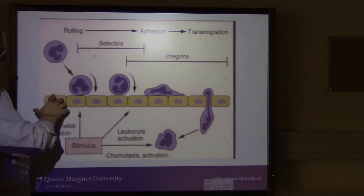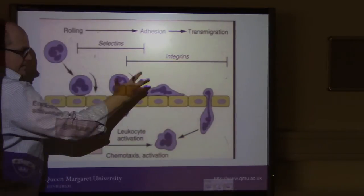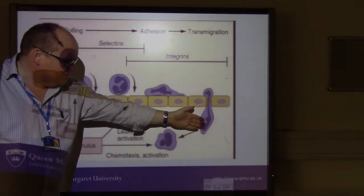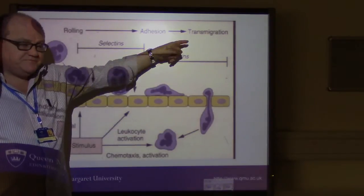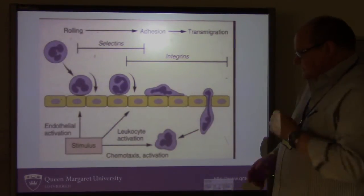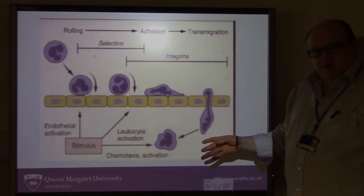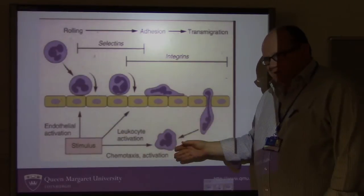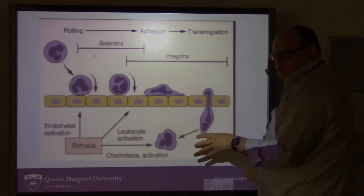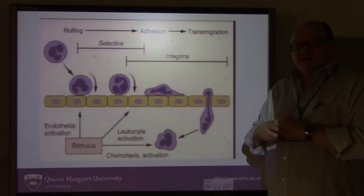Once they've started to roll, you then get a process called adhesion, where they stop rolling and stick. Once the leukocytes have stuck to the endothelial cell membrane, they then cross through the membrane by a process known as transmigration — taking the white cells from inside the blood vessel to the outside. The area that's damaged and sending out stimuli is also sending out a chemical signal that causes leukocyte activation.